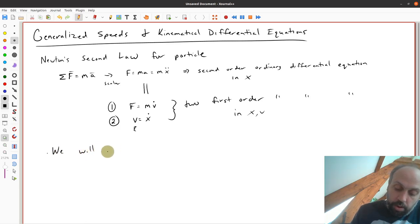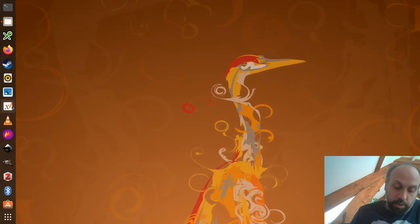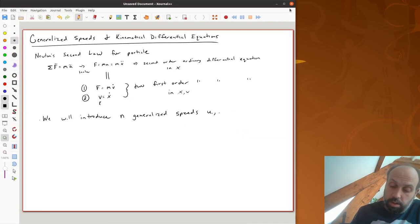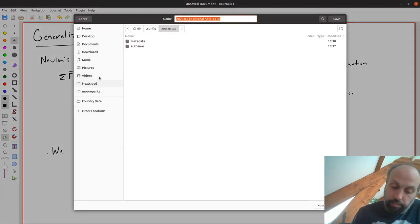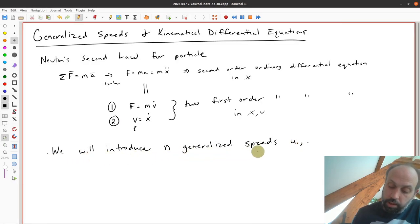So we will introduce generalized speeds. And we're going to generally call them u's. So u1, u2. So we introduce generalized speeds u1 to un. These are scalar variables. And if I put them all, stack them all together in a column vector, then we'll have u, the vector, which is also of n dimensions.